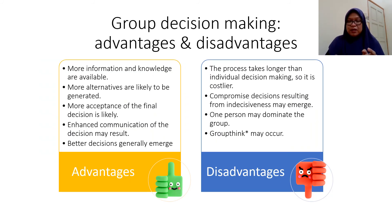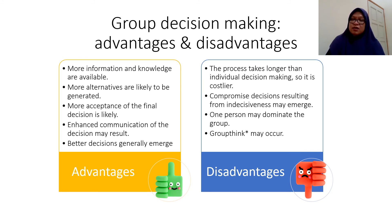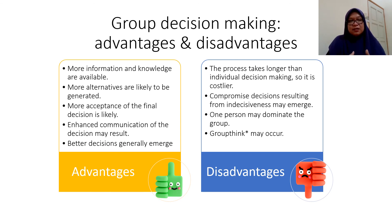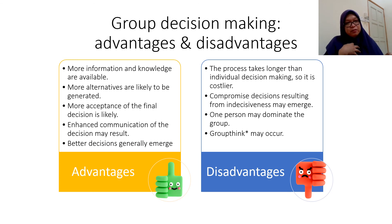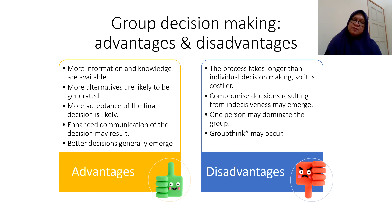There are advantages and disadvantages to group decision making. Among the advantages: we can get more information, more ideas, and better decisions. However, there are disadvantages — for example, it takes longer time, there can be compromise, one person may dominate the group, and groupthink may occur. Groupthink is when, inside a group making a decision, everyone has agreed on option A, but you personally prefer option B. Since everyone is in favour of A, you just go along with it — that is groupthink.